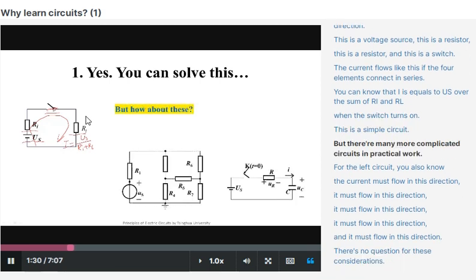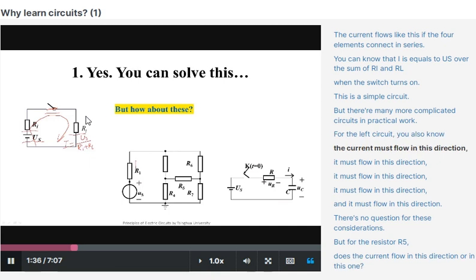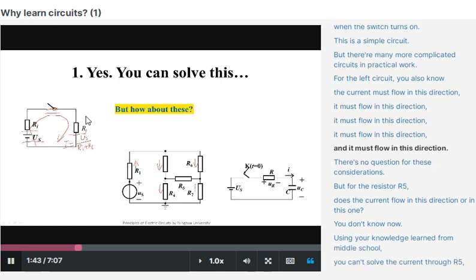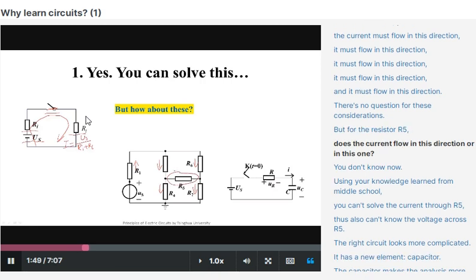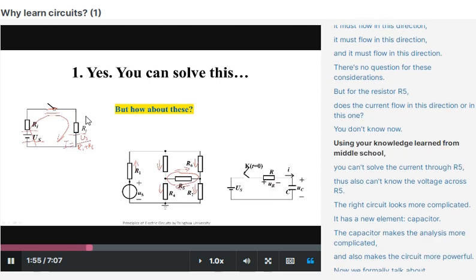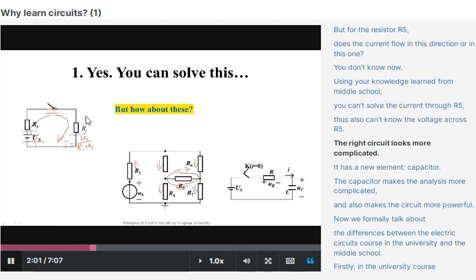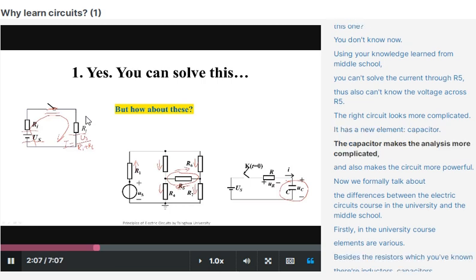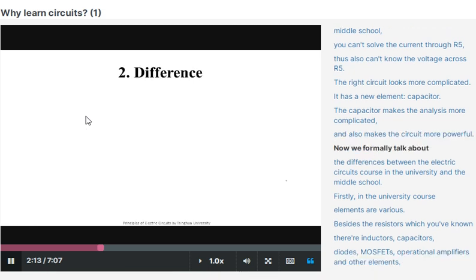There are many more complicated circuits in practical work. For the left circuit, you also know the current must flow in this direction, this direction, this direction, this direction, and this direction. There's no question for these considerations. But for the resistor R5, does the current flow in this direction or in this direction? You don't know. Using your knowledge learned from middle school, you cannot solve the current through R5, thus cannot know the voltage across R5. The right circuit looks more complicated. It has a new element, capacitor. The capacitor makes the analysis more complicated and also makes the circuit more powerful.